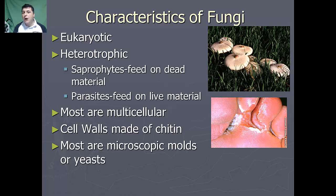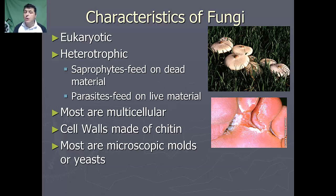Most fungi are multicellular, but some, like the yeast, are actually unicellular. All fungi are going to contain cell walls, and the cell walls will be made of the polysaccharide chitin.